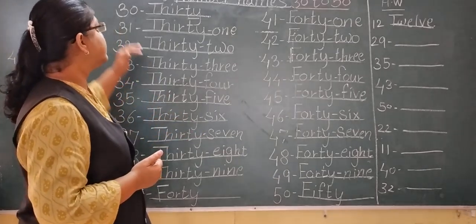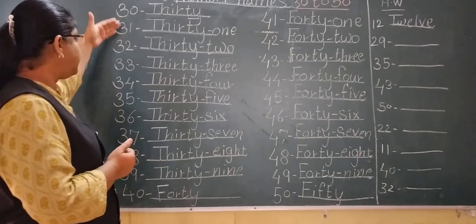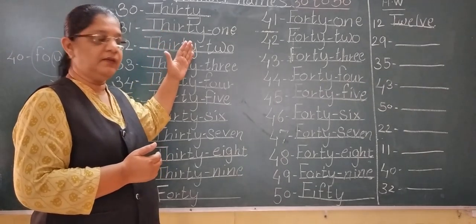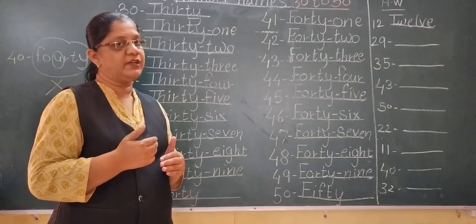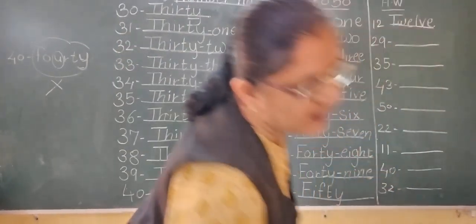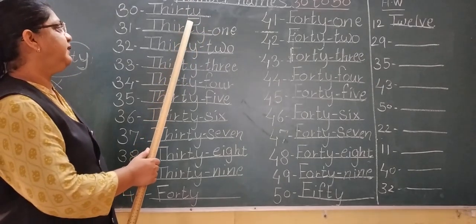Okay. Now see, 30 to 50. First you read these numbers carefully and then you write the spelling. Thirty. See the pronunciation of thirty. T-H-I-R-T-Y, thirty. And in front of this thirty you just add the next number.